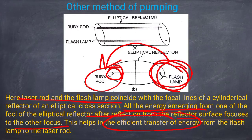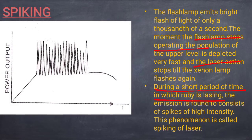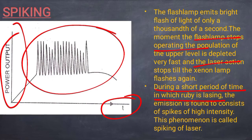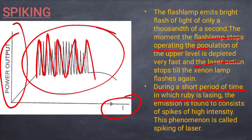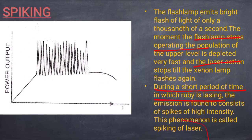The phenomenon of spiking occurs because the flash lamp emits a bright flash for a very short time. When the flash lamp stops operating, the population of the upper level depletes very fast and laser action stops. During the short period when the ruby is lasing, the emission consists of spikes of high intensity, as seen in the power-vs-time graph. This phenomenon is called spiking of the laser.